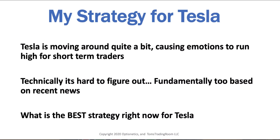If you remember last week, my strategy for Tesla — I said Tesla was moving around a lot, emotions running high, and so was volatility. It's very technically hard to figure out this stock. The recent news put it into the S&P 500, but the news today was that the stock dropped 5% on the open. Last week, we talked about the best strategy being a strangle, putting yourself in a position where you create a high probability trade.